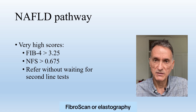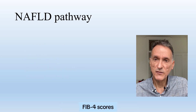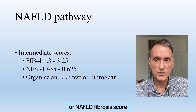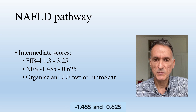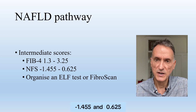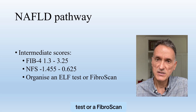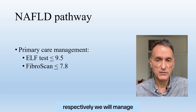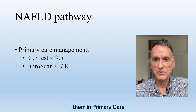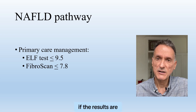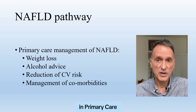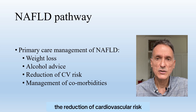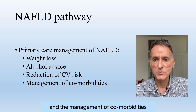Those with intermediate FIB-4 scores — that is between 1.3 and 3.25 — or NAFLD fibrosis score between minus 1.455 and 0.675, should have an ELF test or fibroscan. If the result is 9.5 or less, or 7.8 or less respectively, we will manage them in primary care and will refer if the results are above those limits. In primary care, the treatment for NAFLD is weight loss, alcohol advice, the reduction of cardiovascular risk, and the management of comorbidities.